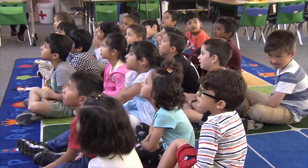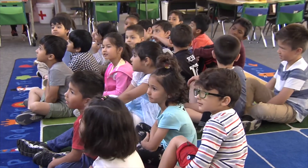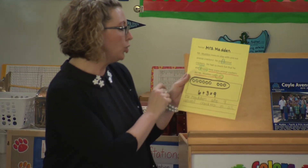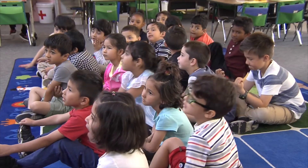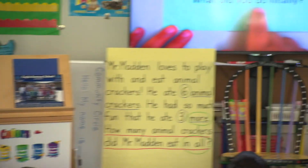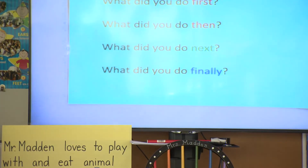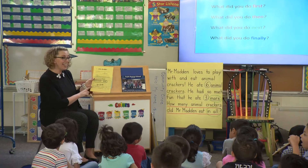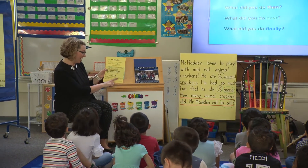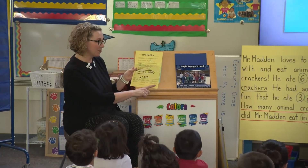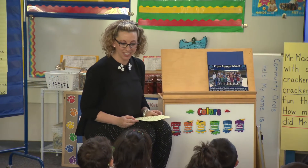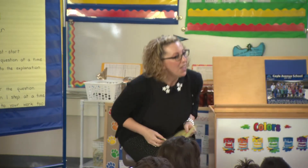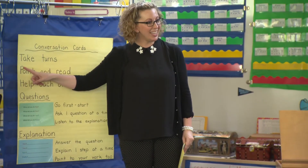What did you do first? First, I drew six circles to show that Mr. Madden ate six animal crackers. What did you do first? Finally, I wrote a math equation — six plus three equals nine — and an answer sentence: Mr. Madden ate nine animal crackers in all. How did we do in our conversation? Good! Now you are going to go and have a conversation! When you have your conversation, you will take turns!